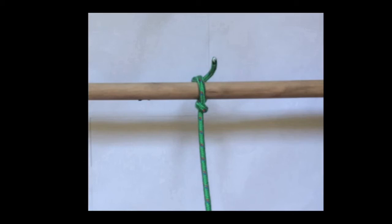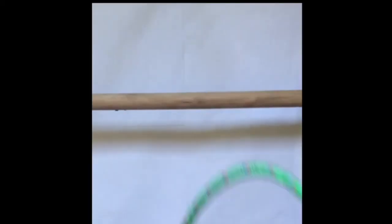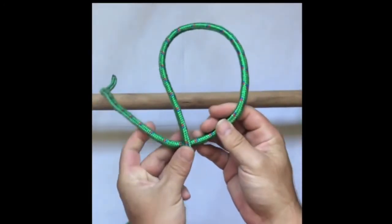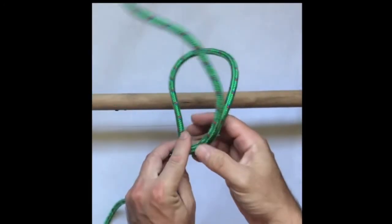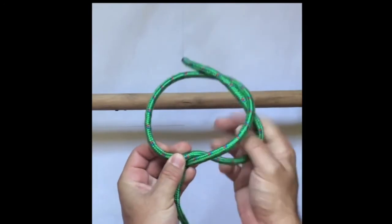Let's have a look at that again without the spar in the way. So we make our loop, we pass around ourselves, and then we spiral.